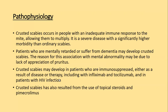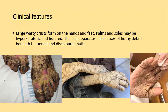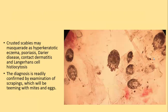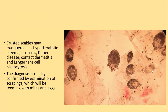Clinically, large gritty crusts are seen on hands and feet; palms and soles may show hyperkeratosis and fissuring. The nail apparatus shows masses of horny debris beneath thickened and discolored nails. Erythema and scaling occur on the face, neck, scalp, and trunk and may be generalized. Pruritus is almost absent or slight but may be severe. Generalized lymphadenopathy is present in some cases, and blood eosinophilia and elevated IgE levels are common. Crusted scabies may be misdiagnosed as hyperkeratotic eczema, plaque psoriasis, Darier disease, contact dermatitis, or Langerhans cell histiocytosis. If the lesions are scraped, hundreds of mites are seen.